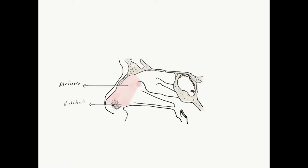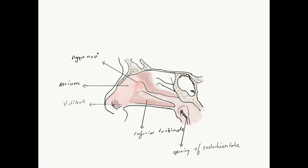Coming to the lateral wall proper. The initial portion of the lateral wall consists of skin and hair, and this area is called the vestibule. There is an area covered only by mucosa called the atrium, which shows an elevation formed by an anterior ethmoidal air cell called the agger nasi. It is behind this agger nasi that we find three scroll-like structures called the inferior turbinate, behind which we see the opening of the eustachian tube. Then we have the middle turbinate and superior turbinate, all enclosing their corresponding meatus underneath.